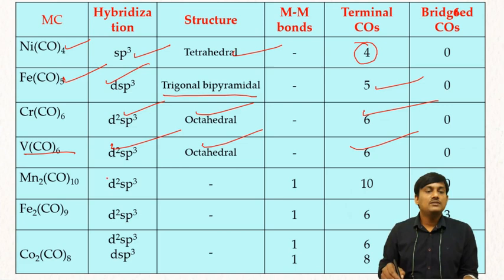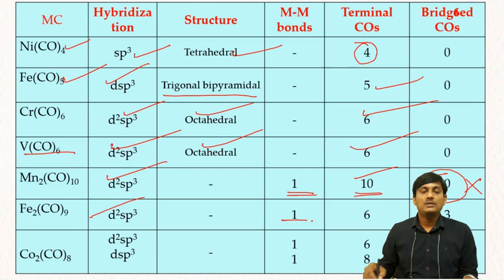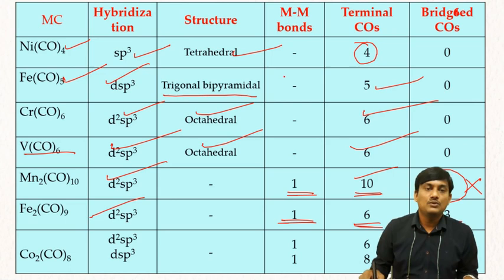Mn₂CO₁₀: d²sp³ hybridization, 1 metal-metal bond, 10 terminal COs, no bridged CO. Fe₂CO₉: d²sp³ hybridization, 1 metal-metal bond, 6 terminal COs, and 3 bridged COs.